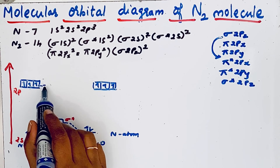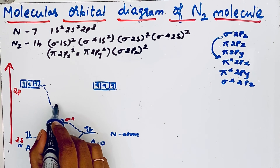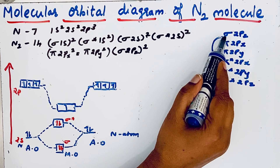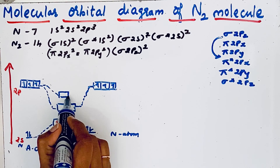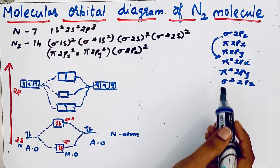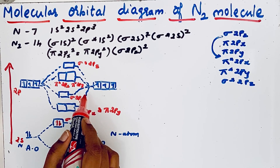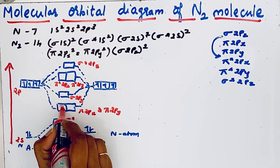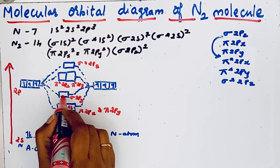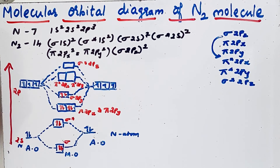Due to sp mixing, pi 2px and pi 2py come first — we can show them this way. Then after that we draw sigma 2pz, then pi* 2px and pi* 2py, and finally sigma* 2pz. Electrons first enter into the low-energy bonding molecular orbitals. We already have four electrons accounted for, so the remaining two electrons enter into the sigma 2pz orbital. This is the molecular orbital diagram of the nitrogen molecule.